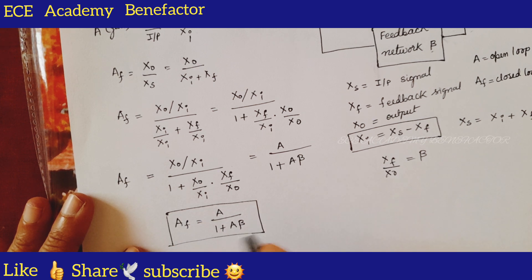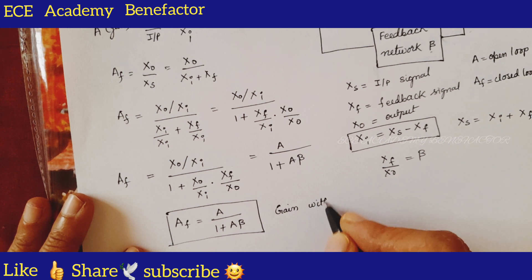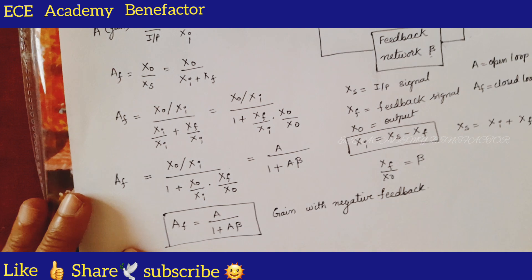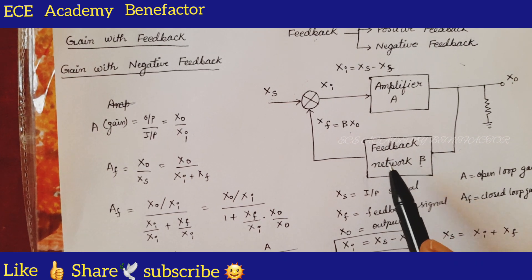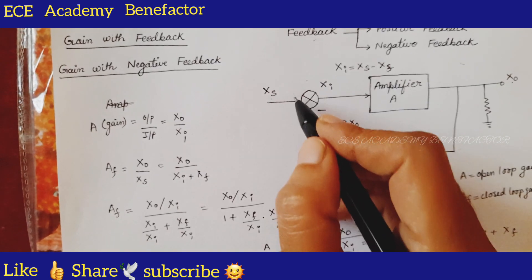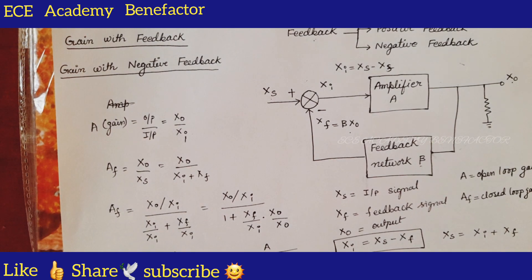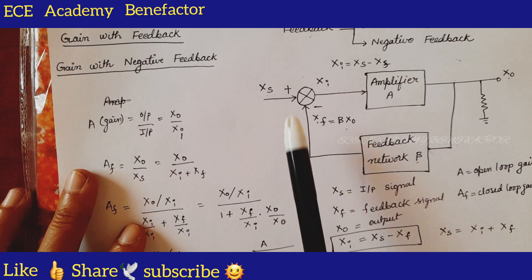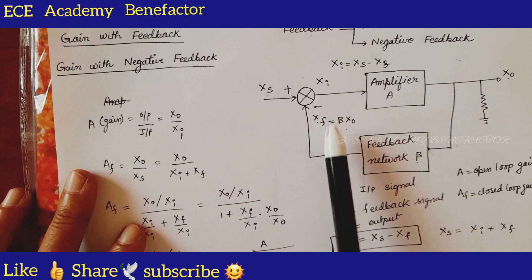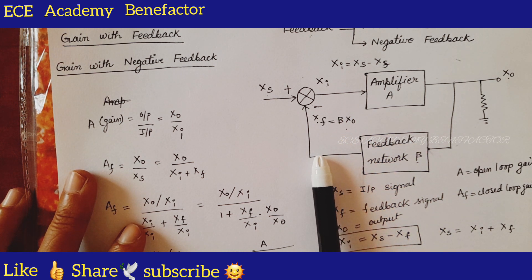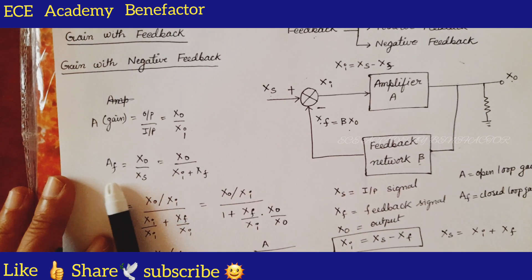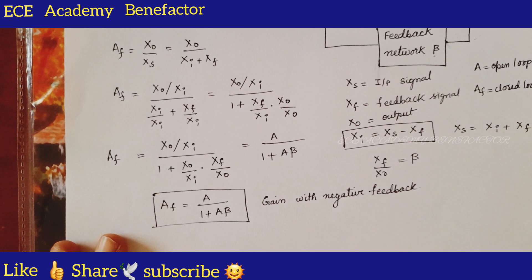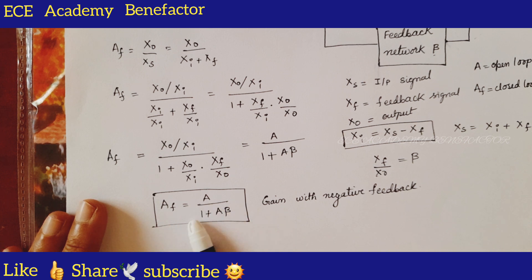This is the gain of negative feedback — gain with negative feedback. Why is it negative feedback? Because the feedback signal is in opposite phase with the incoming signal, shown with opposite polarities. This is the block diagram of negative feedback. First write the gain equation A equals x_naught by x_i, then write the gain with feedback x_naught by x_s and simplify it. We get A_f equals A by 1 plus A beta.